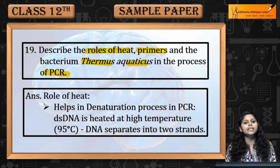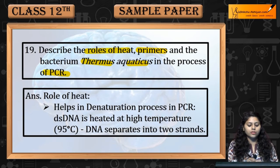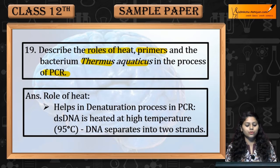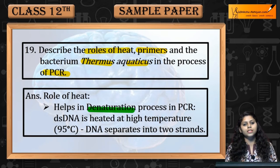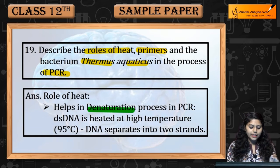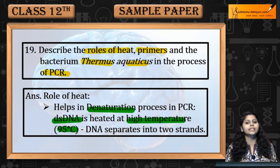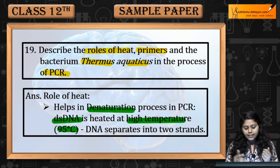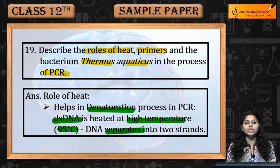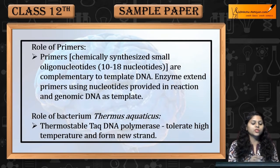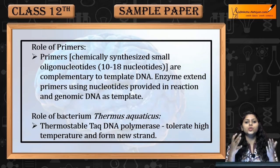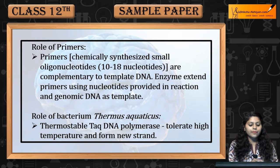PCR is Polymerase Chain Reaction. सबसे पहले heat का role — heat help करती है denaturation in PCR. Double stranded DNA को high temperature around 95 degree Celsius पर heat up करते हैं, तो DNA के strands separate हो जाते हैं into two single strands.